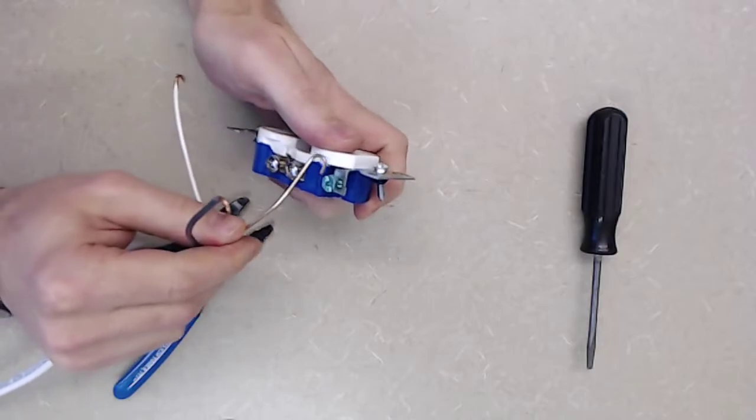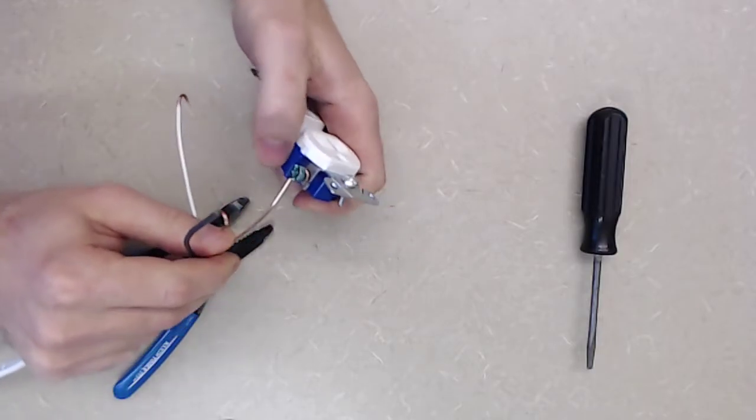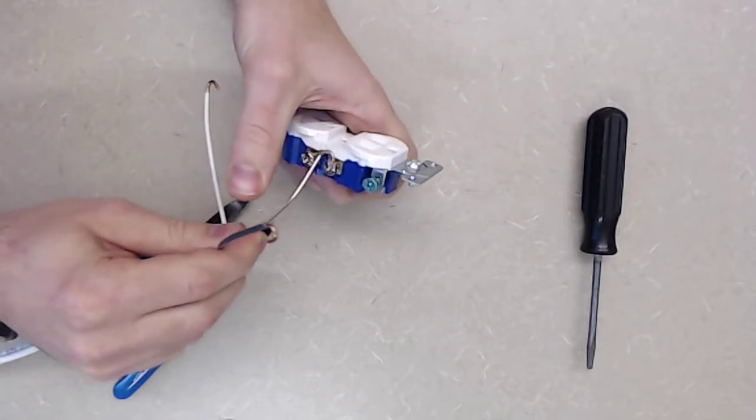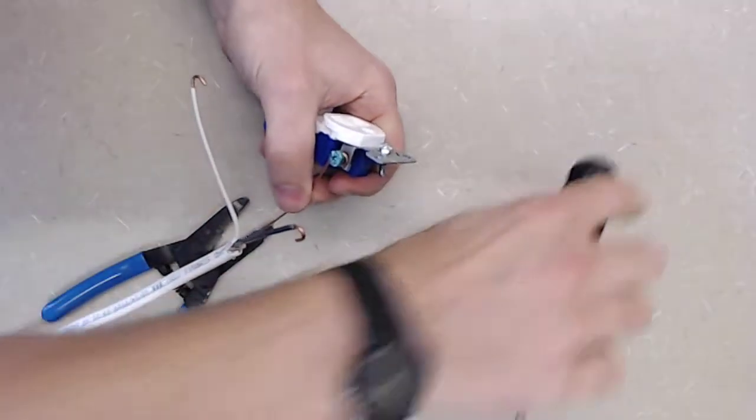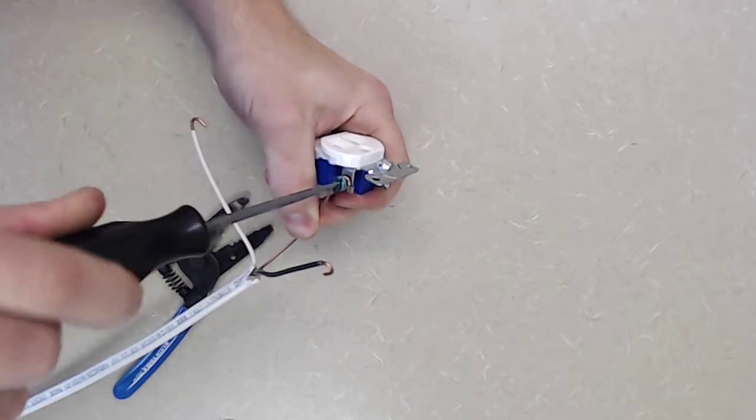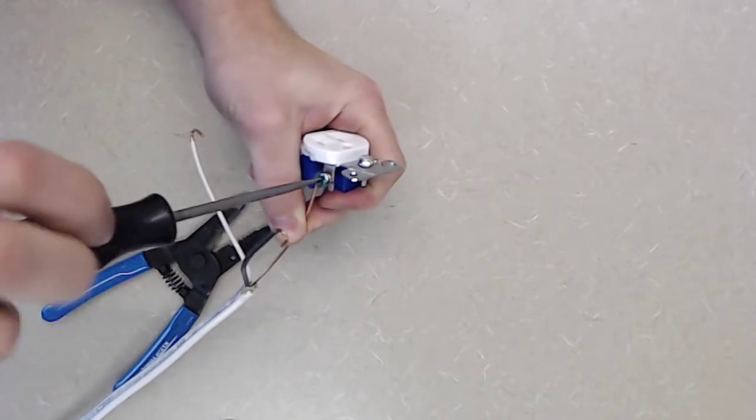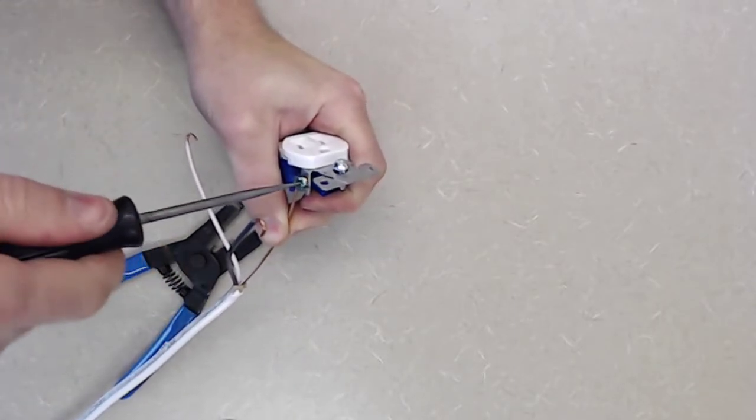So starting with the ground coming in here, and I always want to wrap that wire clockwise around the screw, because that's the way that when you tighten it, it's going to actually pull that loop of the conductor into itself.